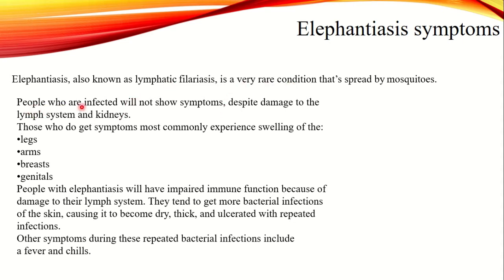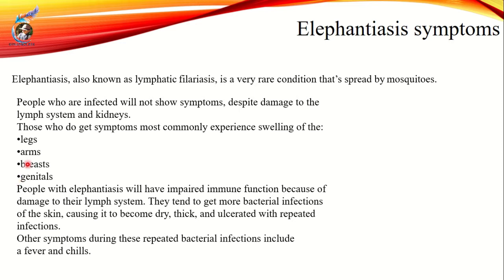Those infected may not show symptoms initially, despite damage to the lymphatic system and kidneys. Those who do get symptoms most commonly experience swelling of the legs, arms, breasts, and genitals. People with elephantiasis have impaired immune function because the lymphatic system is damaged. This leads to bacterial infections in the skin, dry skin, ulcers, fever, and chills.